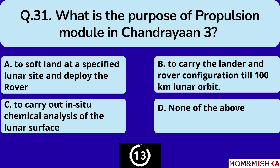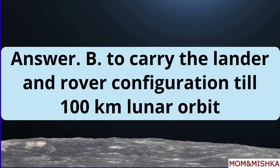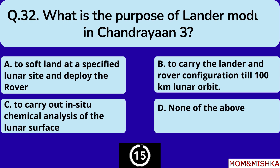What is the purpose of the propulsion module in Chandrayaan-3? Option B — to carry the lander and rover configuration till 100 kilometer lunar orbit.